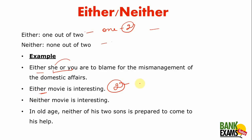'Either movie is interesting' means there are two movies and one of them is interesting. 'Neither movie is interesting' means there are two movies and none of them is interesting. Another example: 'In old age, neither of his two sons is prepared to come to his help.' There are two sons and none of them is ready to help their parents.